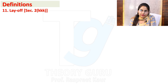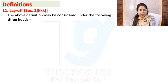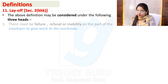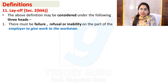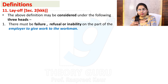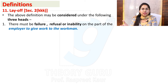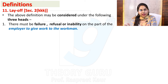First of all, we have Lay Off, Section 2(kkk). Lay Off may be considered under the following 3 heads. First, there must be a failure, refusal, or inability on the part of the employer to give work to the workman. This is the case of Lay Off, which means that the employer can't give work — either he has failed, or refused, or has an inability. Like, there are 10 people needed on the machine but 12 are available, so they cannot give work to all.